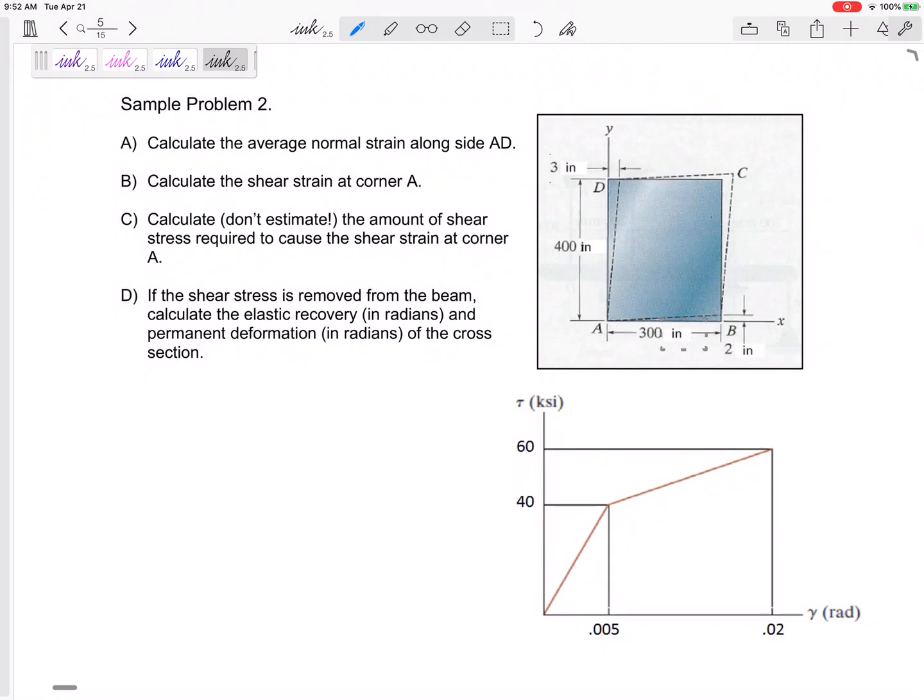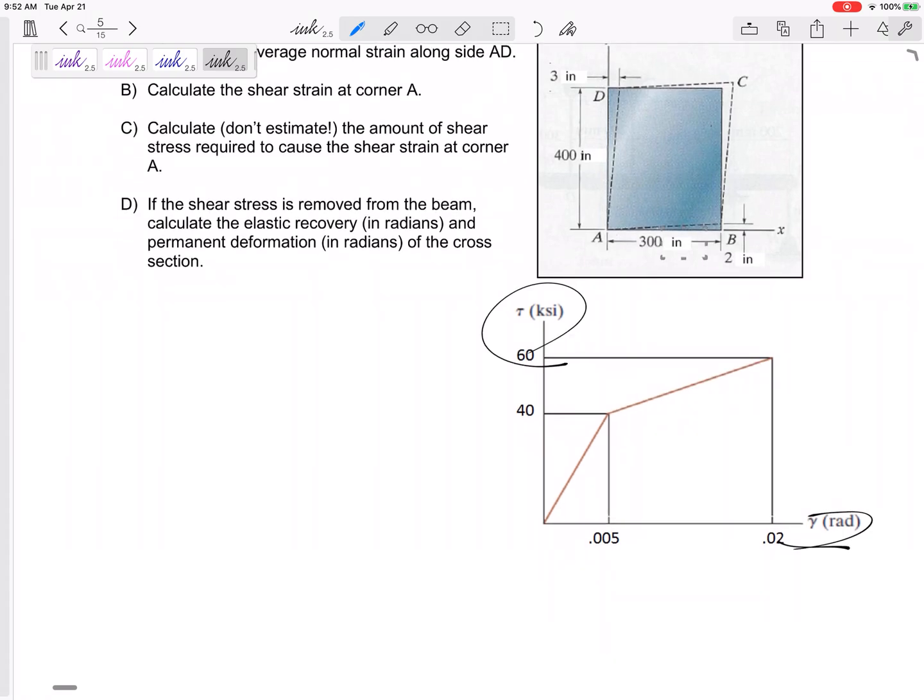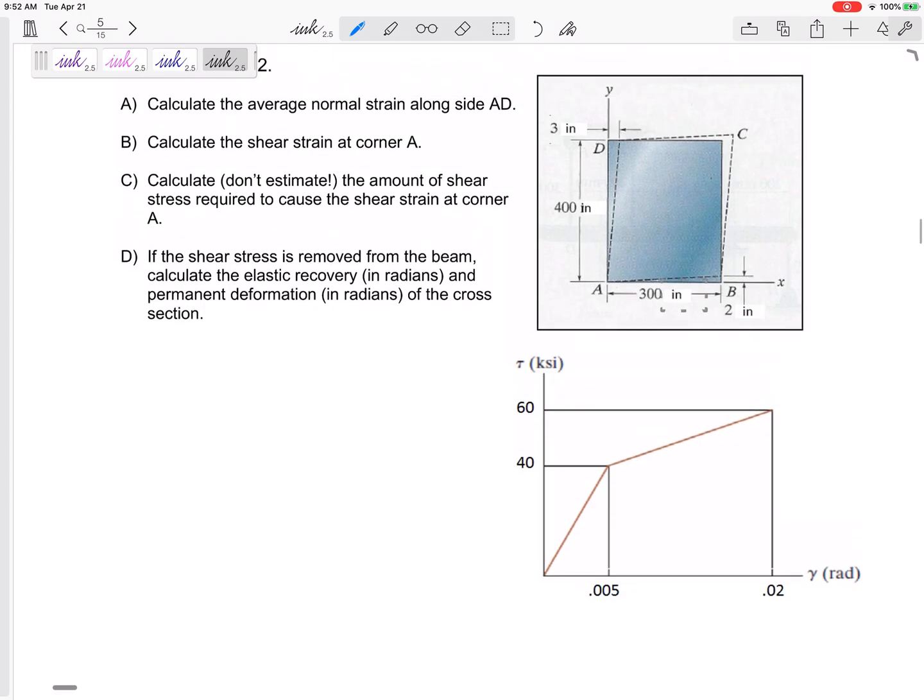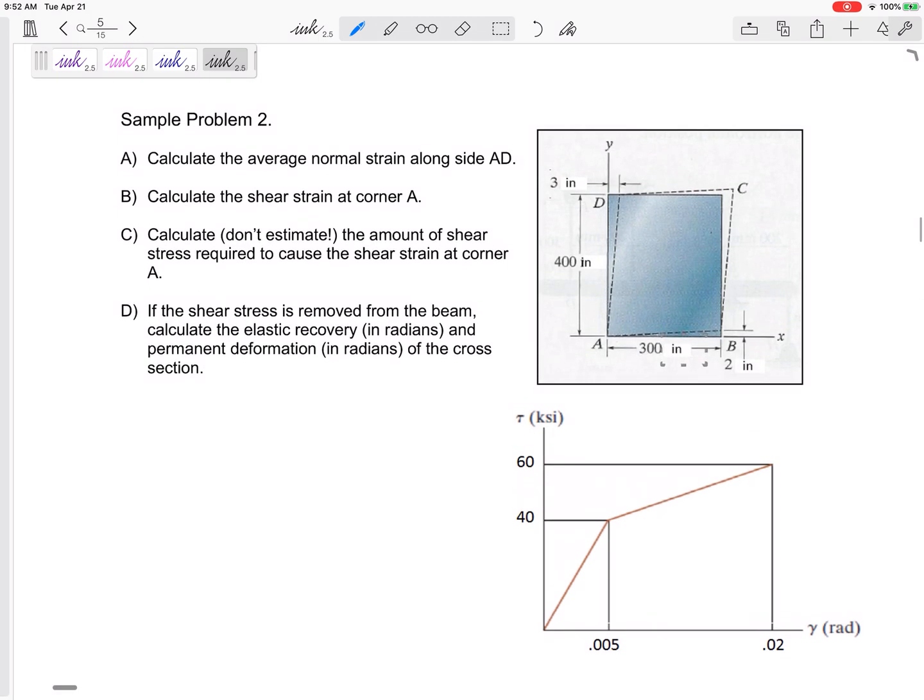All right, so problem number two is going to be a loading and unloading problem loading into the yielding region and then unloading. It might be shear which is what this one is, but definitely might be normal.